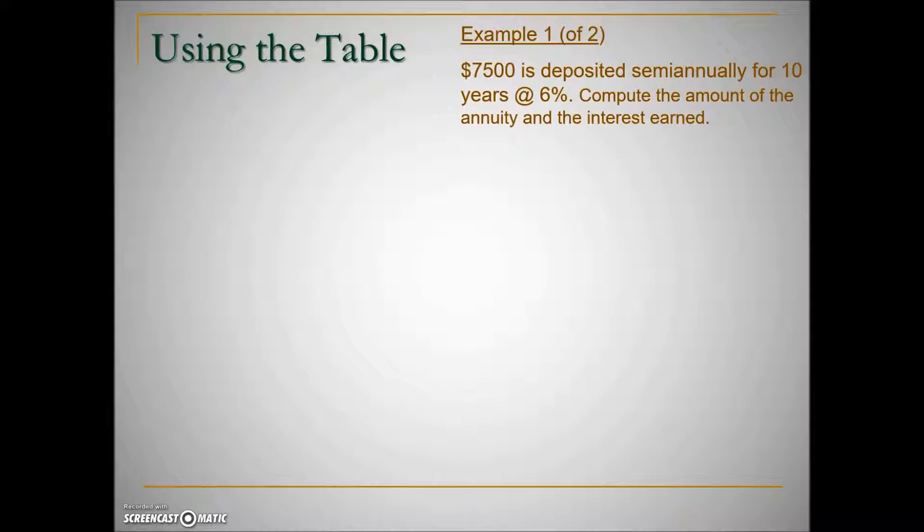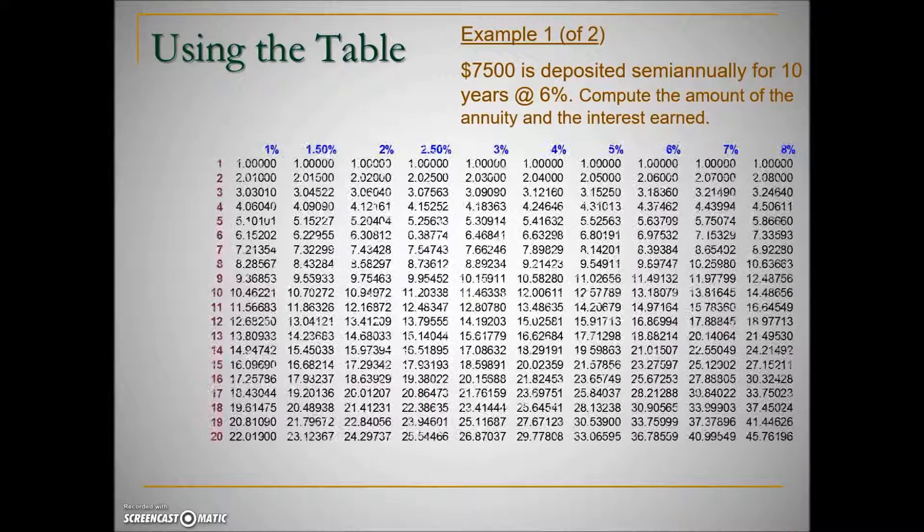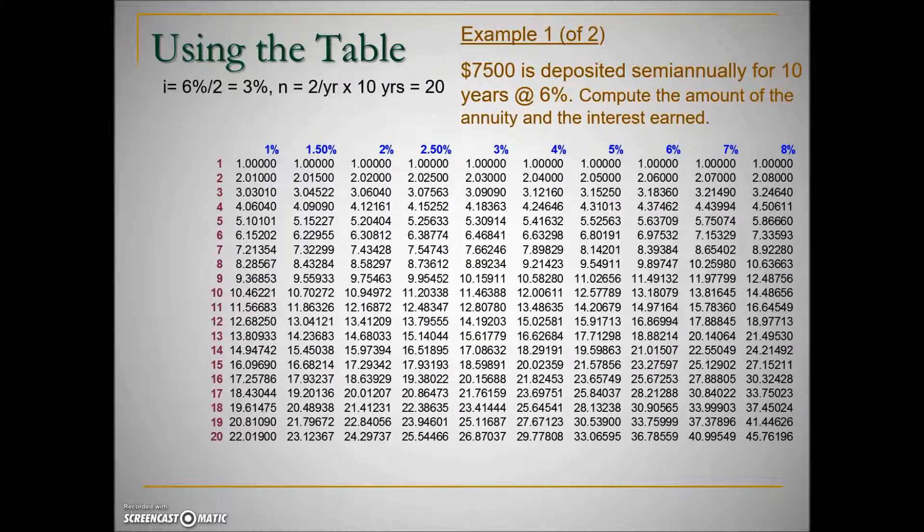So twice a year this individual is depositing $7,500. That deposit is growing with a compounding interest rate of 6%. We need to determine what the interest rate per period is, so we will take 6% divided by 2 because it's semi-annually, which gives us an interest rate per period of 3%. How many total compound periods will there be for this annuity? It's being calculated twice a year and the length of this annuity is 10 years, so 2 times 10 will be 20.